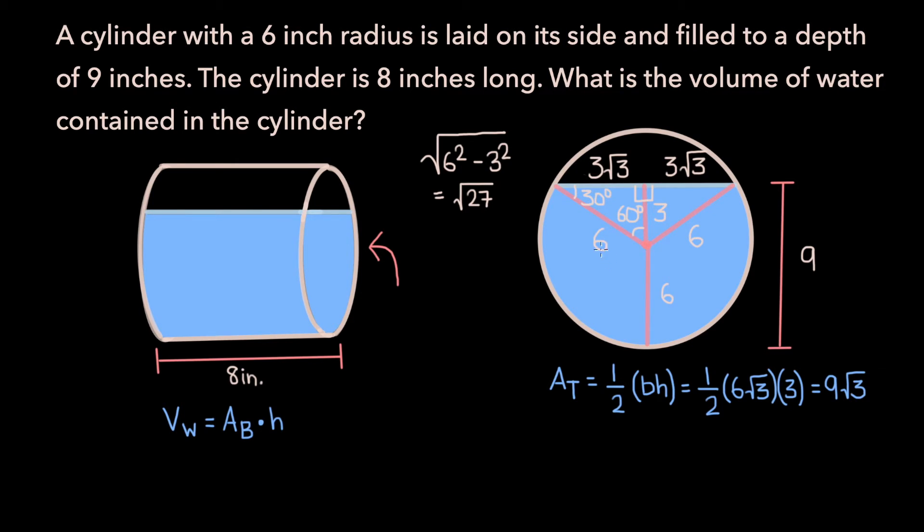Now we need to find the area of the remaining portion of the base. Now the technical term for this remaining portion is a sector, so I'll refer to it as that from now on. This angle here must be 240 degrees, since this entire angle is 120, and what that means is that the sector must be 240 over 360, or two-thirds of the entire circle.